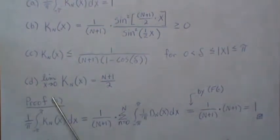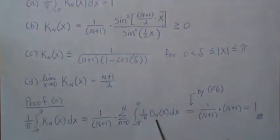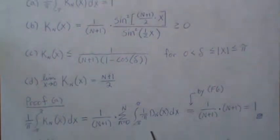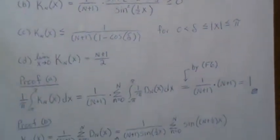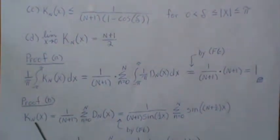The proof of property A — we want to show that the integral equals one. We replace the Fejér kernel by the Cesàro sum of Dirichlet kernels. We proved previously that each one of these Dirichlet kernels integrates to one. So this piece is one, and we're summing it n plus one times, getting n plus one, which then cancels, giving us one.